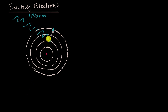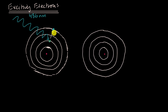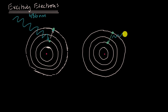So the electron will absorb that photon. Then after some time, it can come back down. That excited electron can go back from the fourth shell to the second shell, and when it does, it will emit a photon of that same wavelength — 486 nanometers.